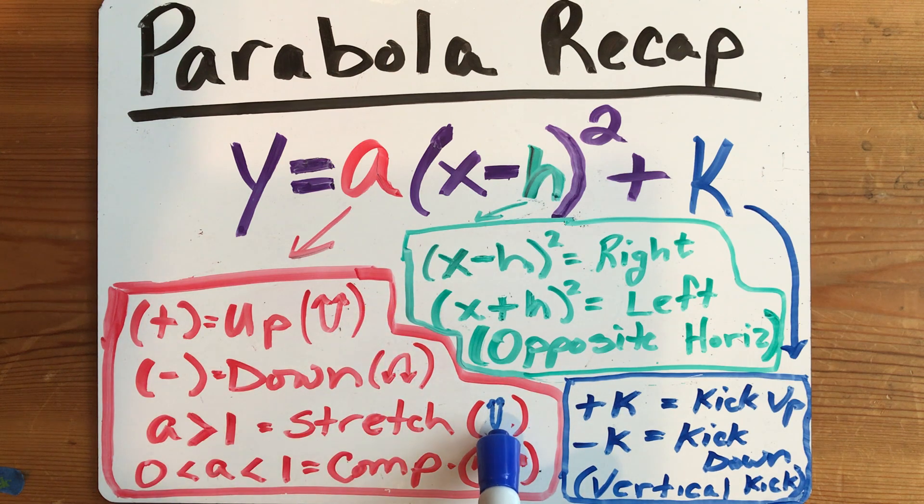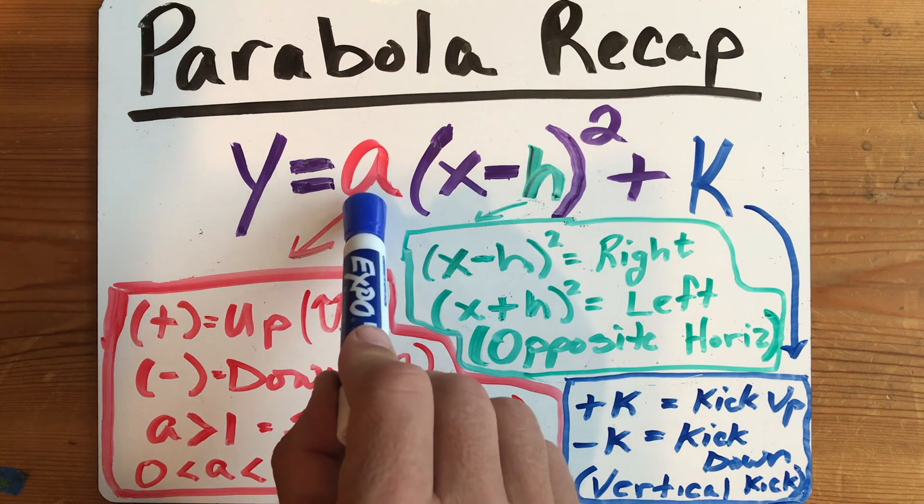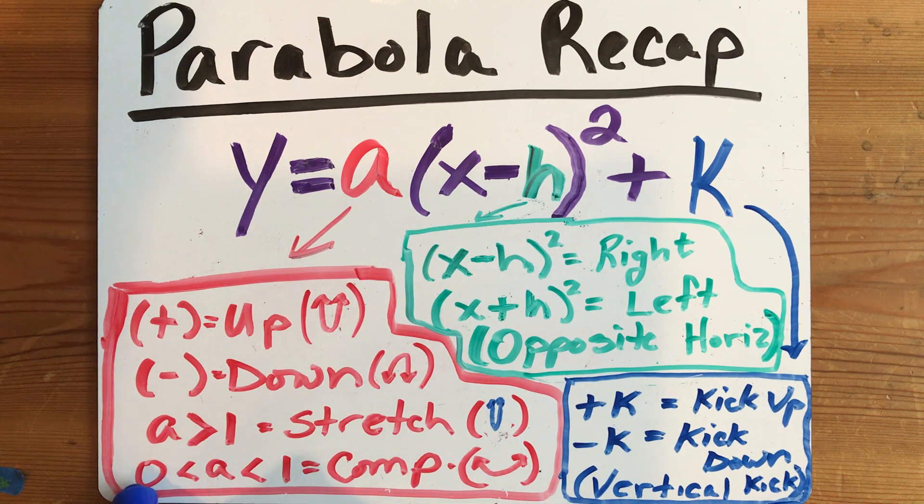It can also tell you the size of the opening, so when it's really skinny like this, or stretched, the number's going to be larger than 1 for this spot right here. If the number's less than 1, but also greater than 0, some kind of fraction or decimal between those numbers, the graph's going to be compressed and look really wide.